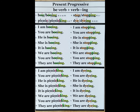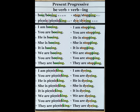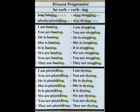Present progressive: be verb plus verb I-N-G. Let's review the spelling rules again. Number 1: if the end of the verb is O-O, we just add I-N-G. For example, boo — booing. I am booing. You are booing. He is booing. She is booing. It is booing. We are booing. You are booing. They are booing.